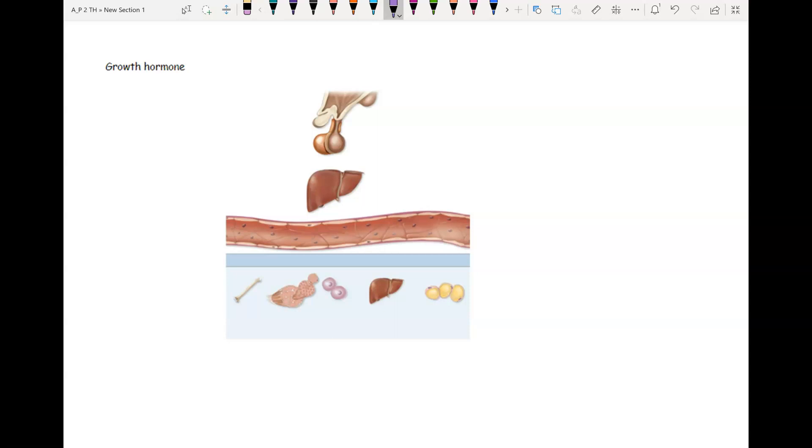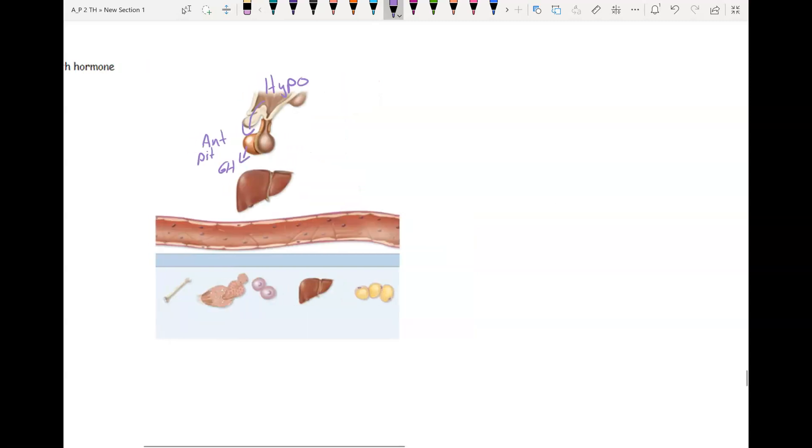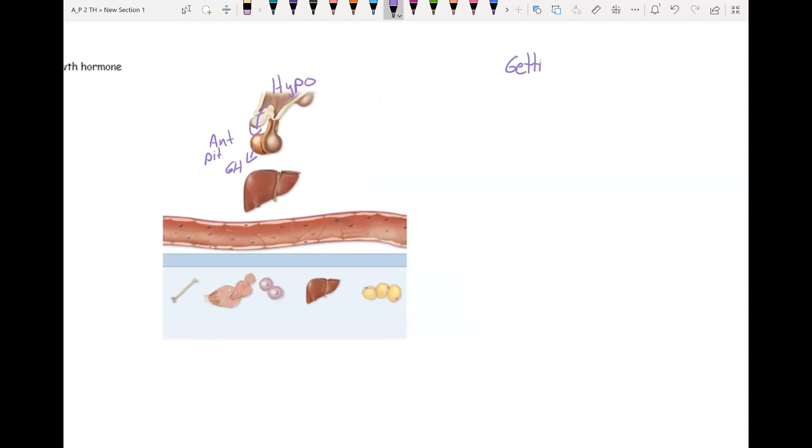So first of all, getting growth hormone. This is controlled by the hypothalamus. Your hypothalamus decides when to secrete growth hormone. It stimulates your anterior pituitary to secrete growth hormone.